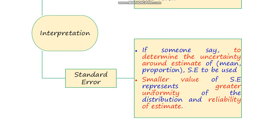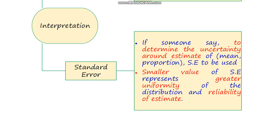For standard error: if someone asks you to determine the uncertainty around an estimate — such as an estimate of mean or proportion — you can use standard error. A smaller value of standard error represents greater uniformity of the distribution and greater reliability of the estimates. Similarly, a larger value of standard error represents minimum uniformity of the distribution.